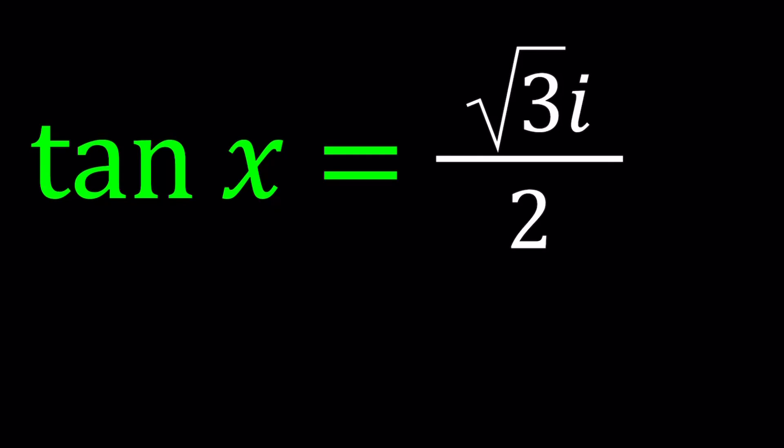Hello everyone. In this video, we're going to be solving an interesting trigonometric equation with complex numbers. Tangent x equals square root of 3 times i divided by 2, and we're going to be solving for x values.